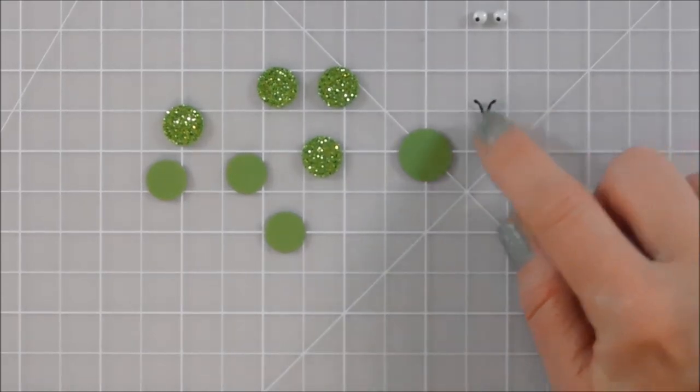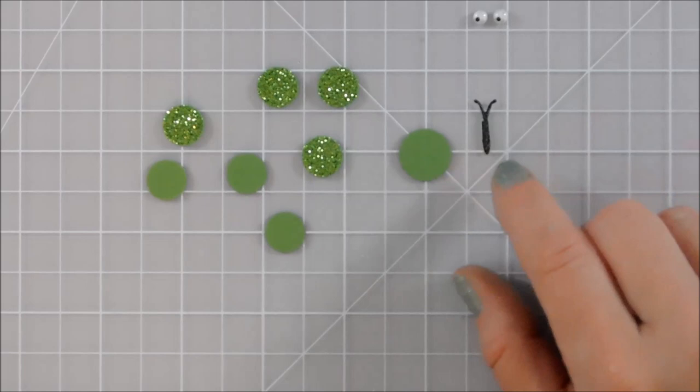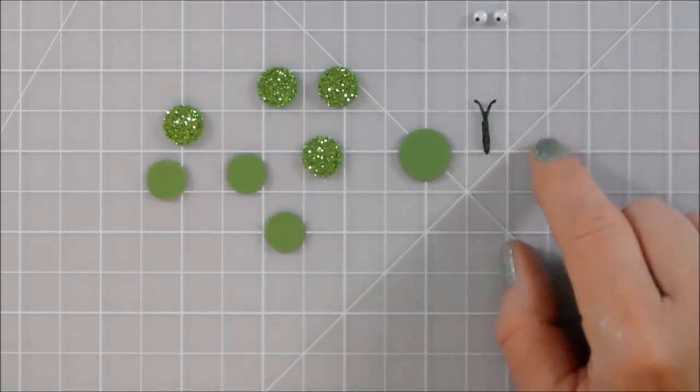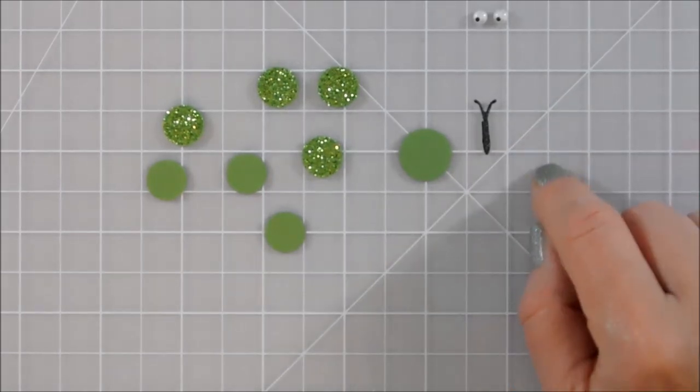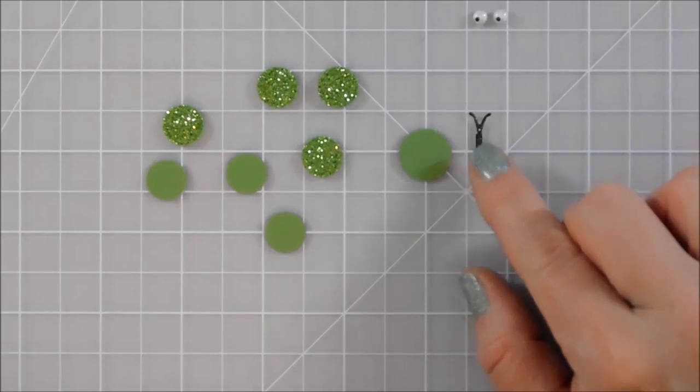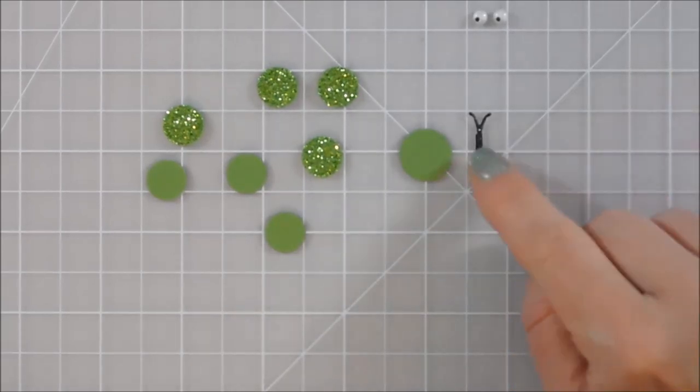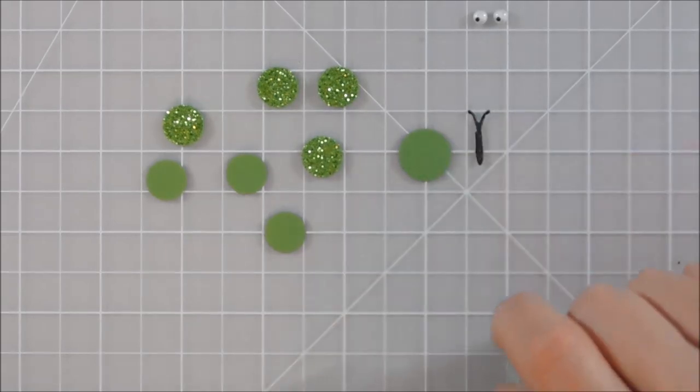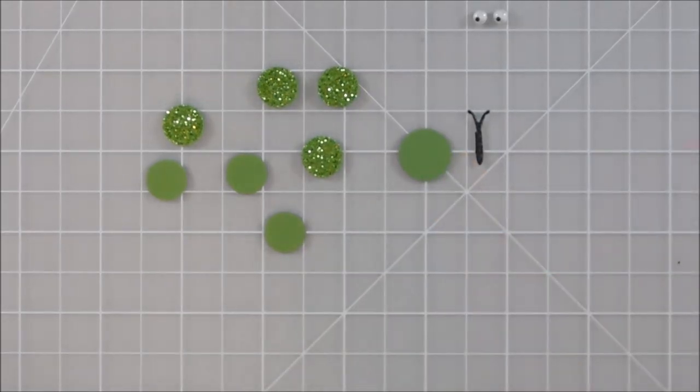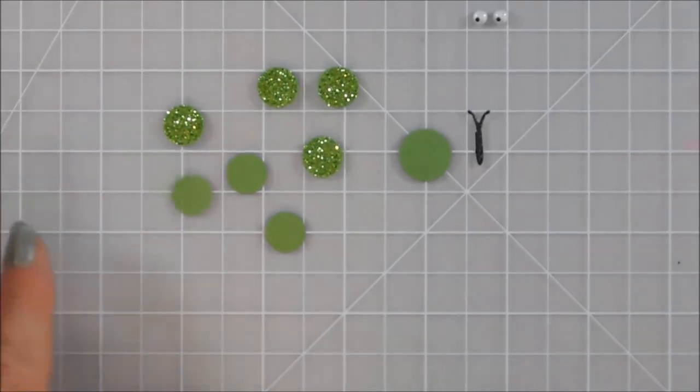If you want to just look for something with little scrolls and swirls on it in your dies or punches, or maybe some of your leafy dies and punches or branchy ones or something like that may have a little section that's going to work right for you there. In this case the butterfly worked out really good and I'm going to start putting my caterpillar together.